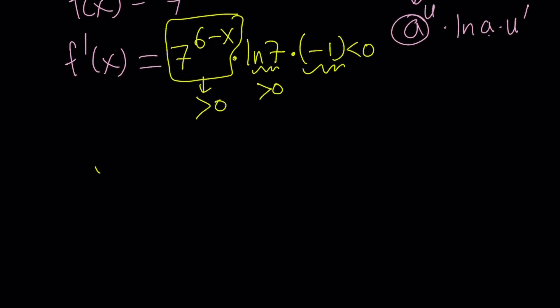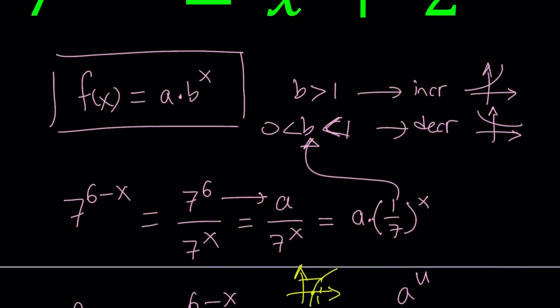which means our function is going to be decreasing. Because if f prime is negative, that implies that on that interval for which f prime is negative, f is going to be decreasing. Okay, great. So, all of that work for showing this is a decreasing function.